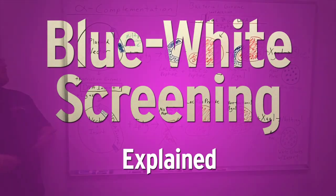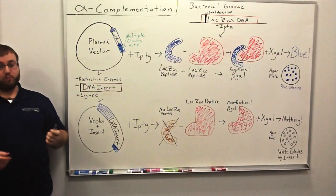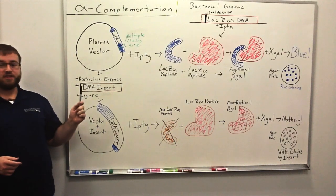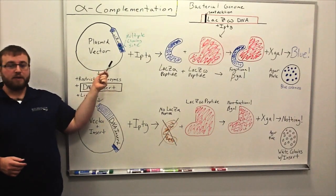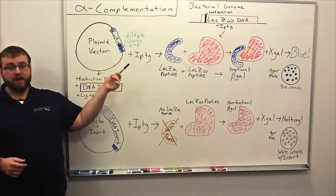Blue-white screening is based on a technique called alpha complementation. It works by first blending the LAC-Z gene into two parts, one part coding the alpha peptide and the other part coding the omega peptide.